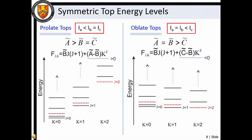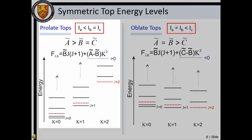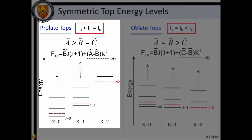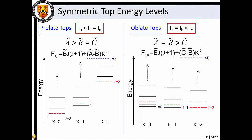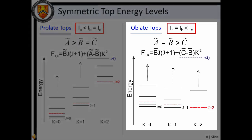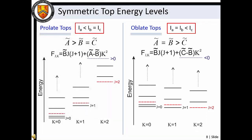In comparing the energy level structures of prolate and oblate tops, we see major differences. For prolate tops, the A rotational constant is larger than the B rotational constant, which results in a positive value for the K² term in the energy level expression. Thus, for a given J value, prolate top level energies increase with increasing K. For oblate tops, the C rotational constant is smaller than the B rotational constant, which results in a negative value for the K² term. Thus, for a given J value, oblate top energies decrease with increasing K.